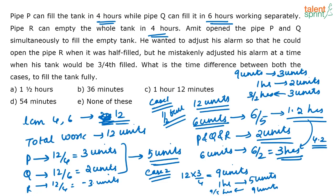The LCM method is an easier method because the calculation is much faster. I hope it is clear now. Let's look at the next question.